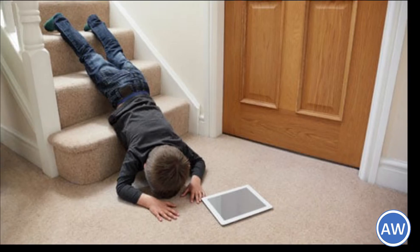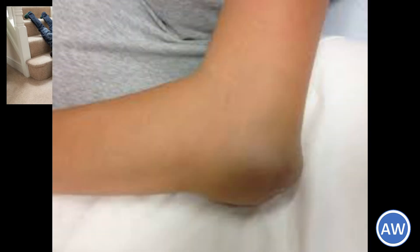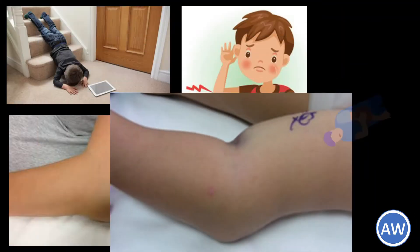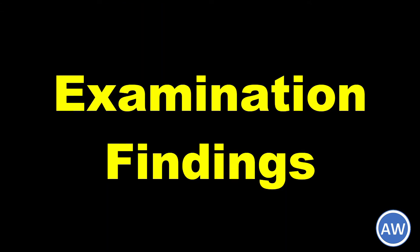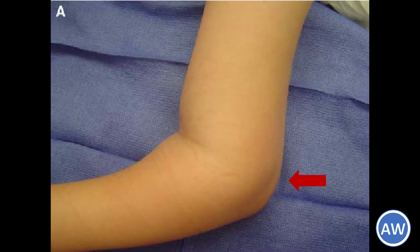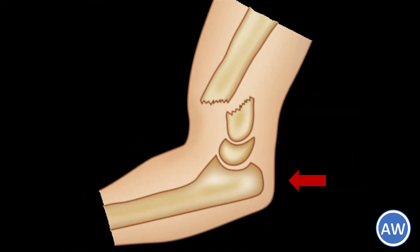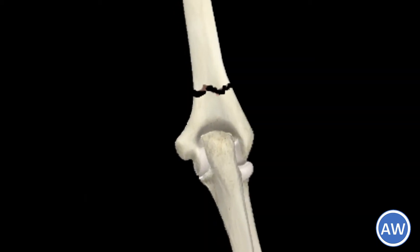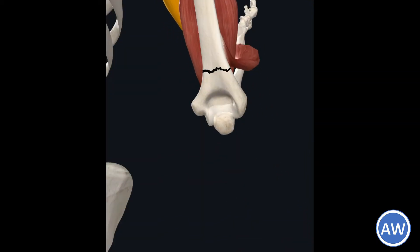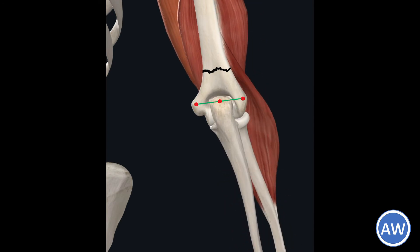The clinical presentation of this condition is as follows. The child has a history of fall followed by pain, swelling, deformity, and inability to move the affected elbow. On examination, the following clinical signs may be observed: unusual posterior prominence of the point of the elbow, which is formed by the tip of the olecranon process. This is because of the backward tilt of the distal fragment. Since the fracture is above the condyles, the three bony point relationship is maintained as in a normal elbow.